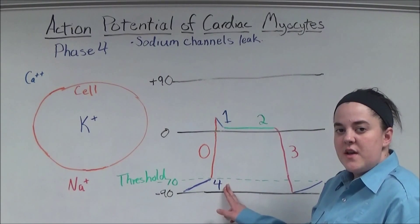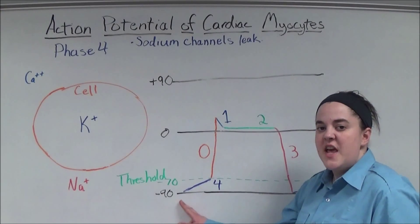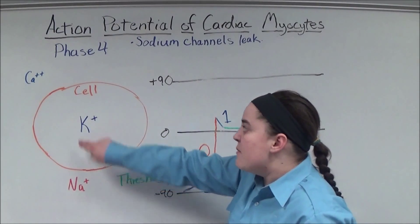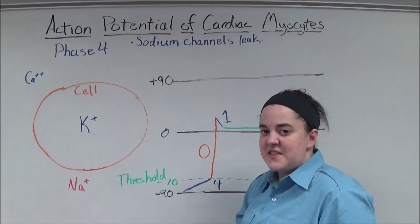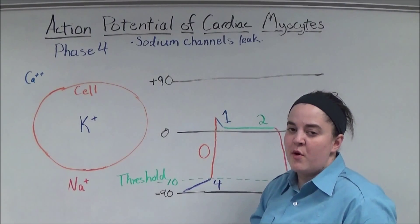Phase four is the resting phase, and the resting potential is negative 90 millivolts. At this point, potassium is inside the cell, and sodium and calcium are outside of the cell, and neither can get into the cell because the sodium fast channels and the calcium slow channels are both closed.